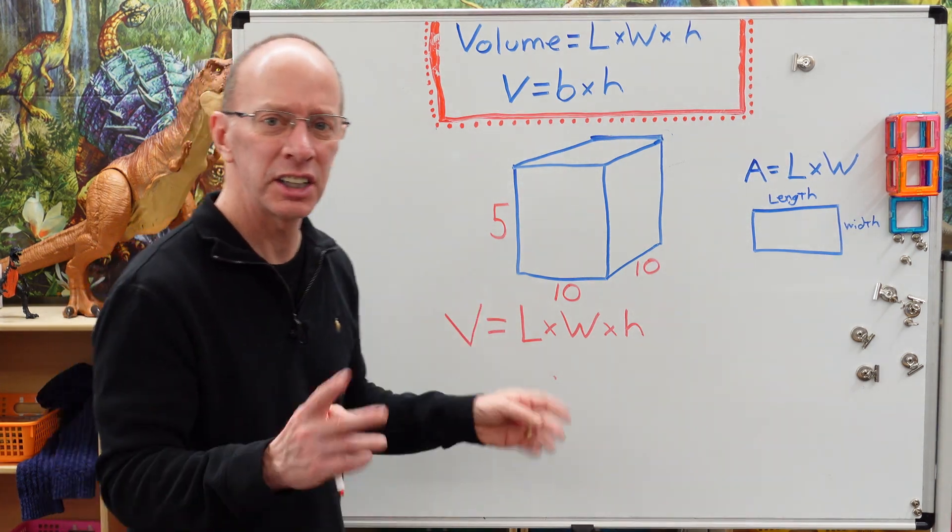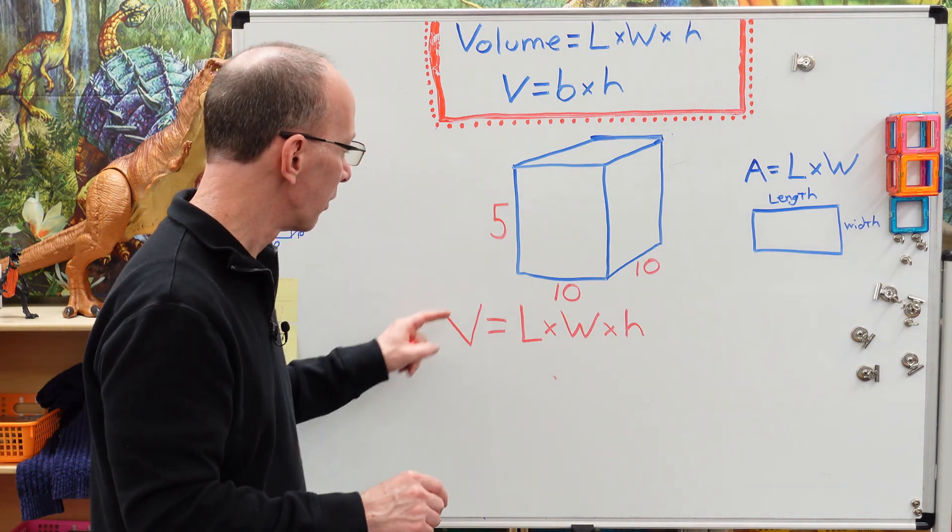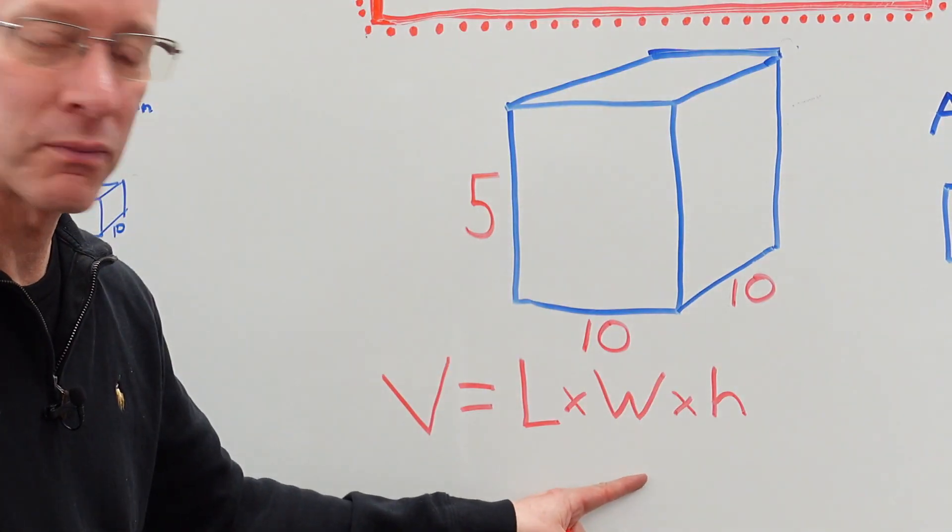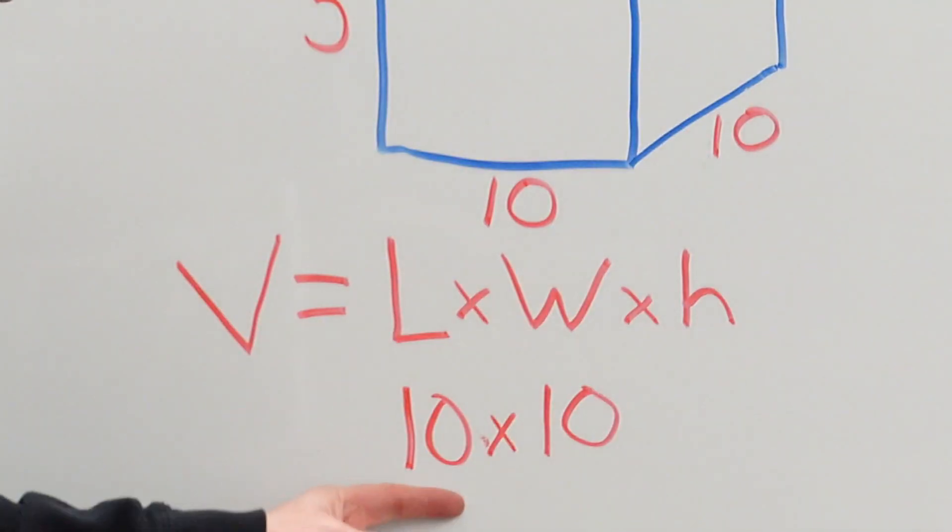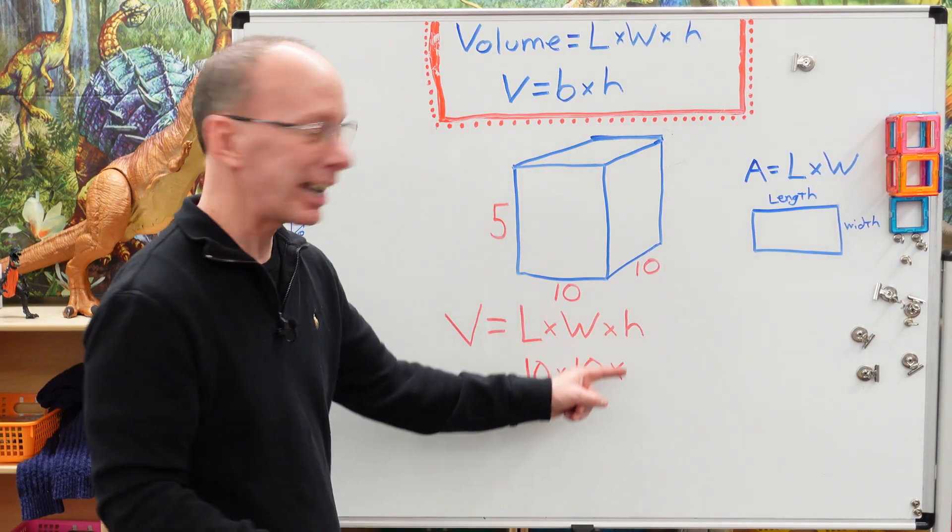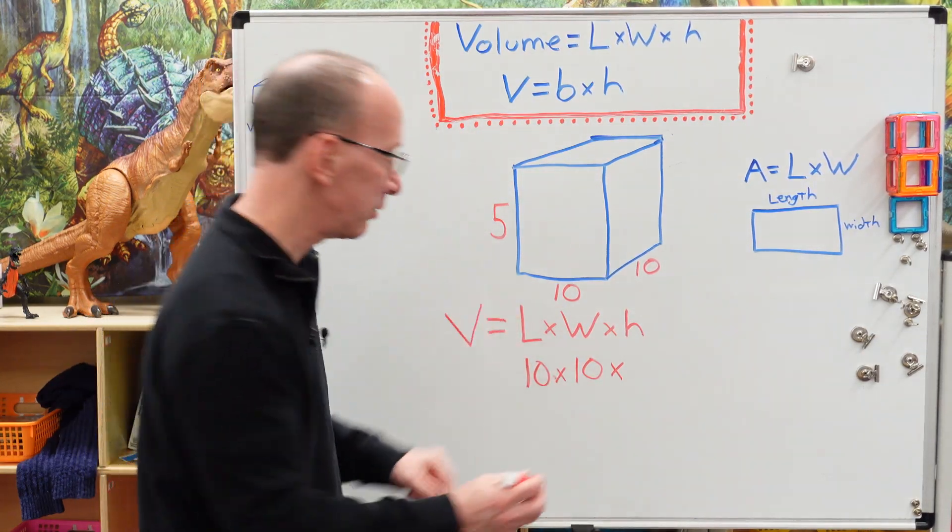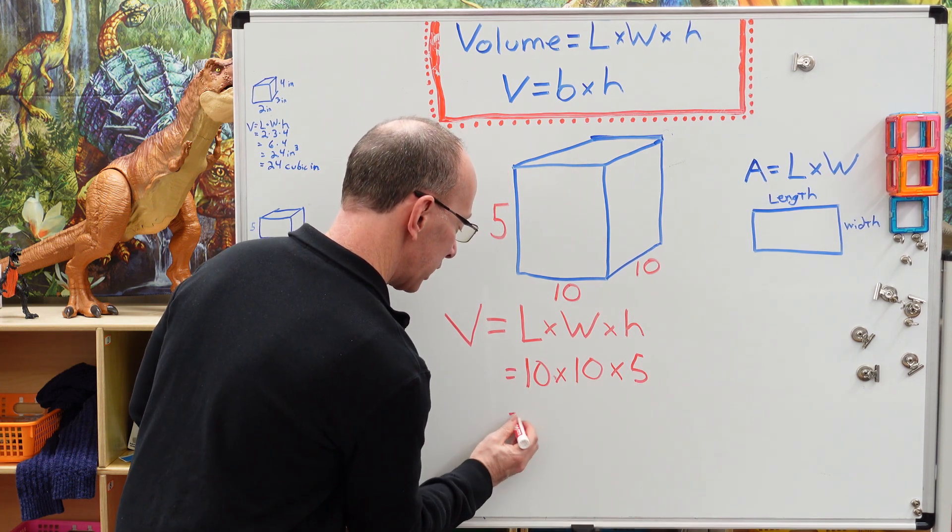So let's get started here. Right now, I'm just going to use basic units of measure. Okay, so length times width, I'm going to take the 10, doesn't matter what 10 because they're both 10. All right. So I got 10 times 10 times our height. That's five. All right, go ahead and put the equal sign there.